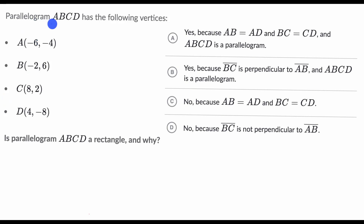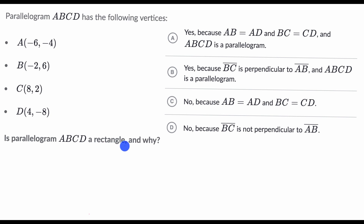We're told that parallelogram ABCD has the following vertices and they give us the coordinates of the different vertices. They ask: is parallelogram ABCD a rectangle and why? Pause this video and try to think about this on your own before we work through it together.